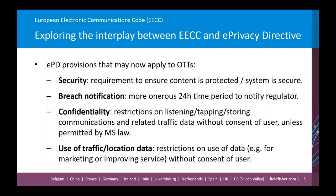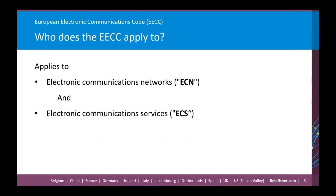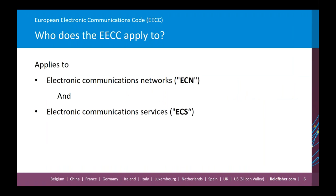Taking a step back to look at who the EECC applies to: it applies to both electronic communication networks (ECNs) and electronic communication services (ECS). ECNs are not controversial — the definition has not changed under the EECC. ECNs are essentially any transmitter or transmission system plus associated equipment, software, and stored data used to convey electronic signals, such as a wired or wireless network of phone cables or mobile phone networks.